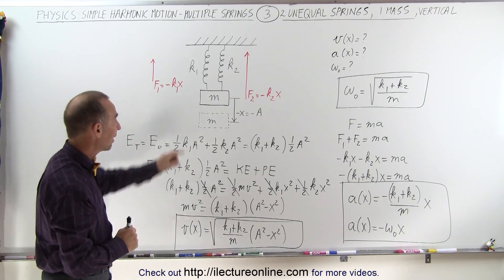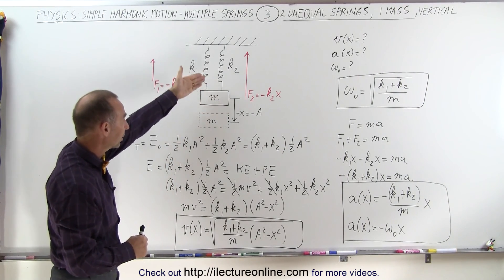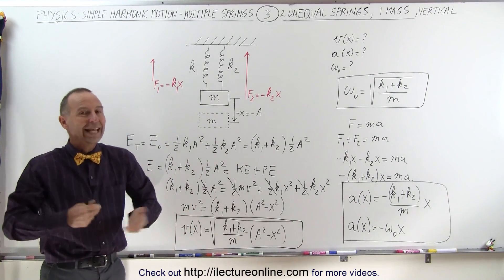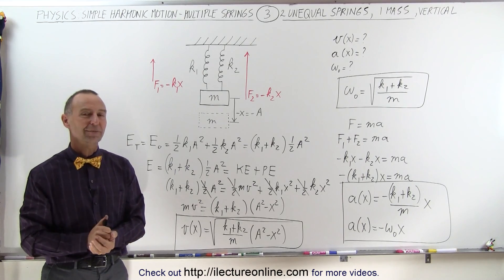And so, that's how we handle it. If we have two springs like this in a vertical direction, side by side, you simply add the two spring constants, and they act as a single spring. And that's how it's done.